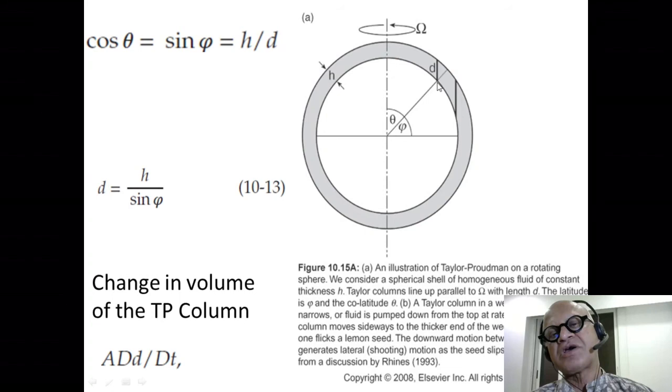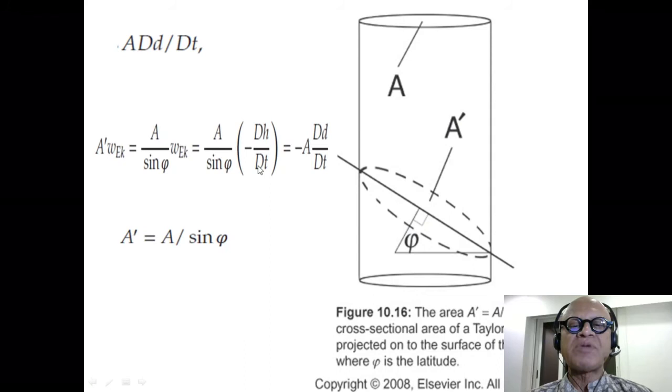So W_Ekman is -dD/dt. You can imagine that Ekman pumping is coming in this direction, so it's actually changing H, but we have to convert into change in D. So Ekman pumping is -dH/dt. H over D is sin ψ, so we can replace that and write this as -A·dD/dt.